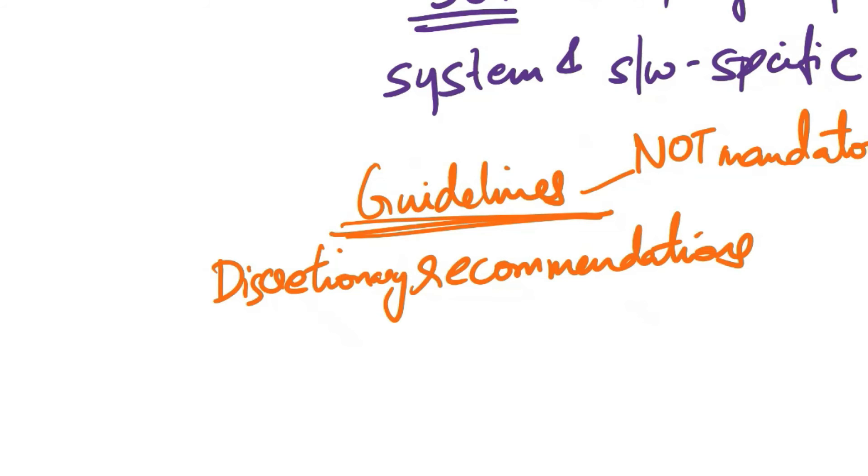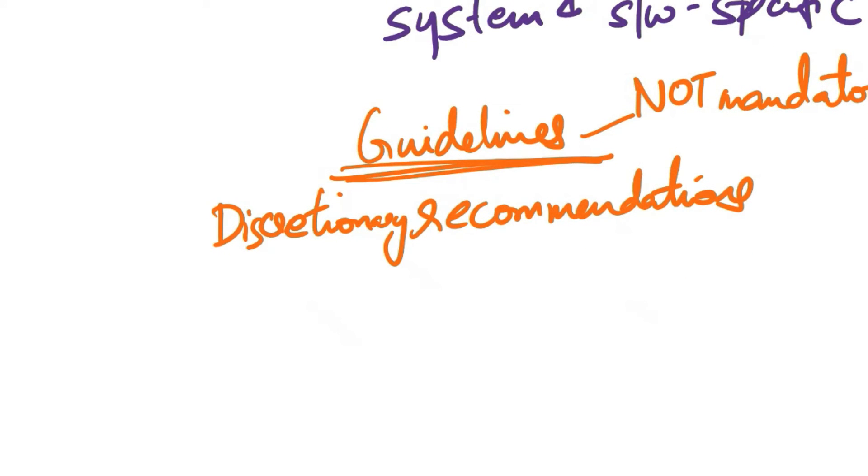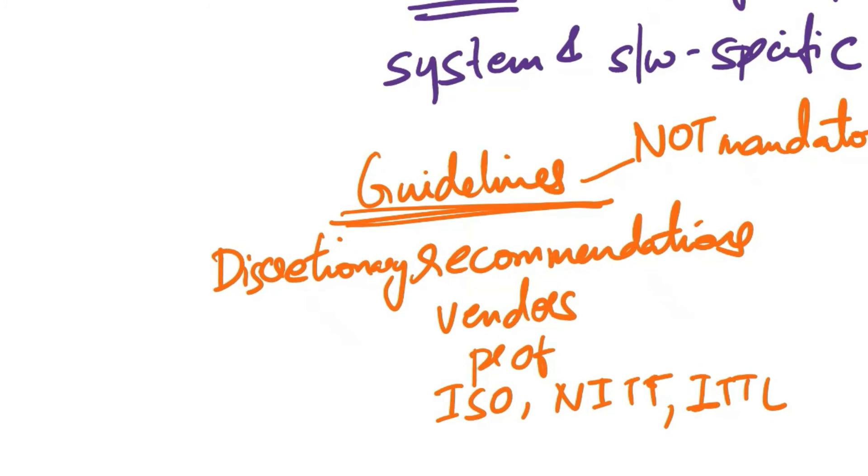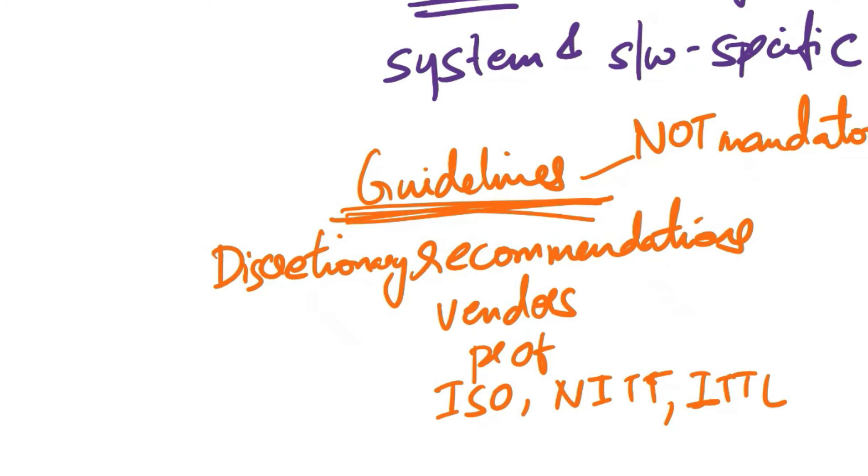Standards are directive, but guidelines provide flexible suggestions for meeting policy intent or implementing requirements from standards and baselines. Guidelines can be internally developed or come from external sources such as vendors, professional security organizations, or frameworks such as ISO, NIST, or ITIL. In essence, guidelines are recommended actions and operational guides providing flexibility where specific standards may not apply or as a recommended approach to achieving applicable standards.